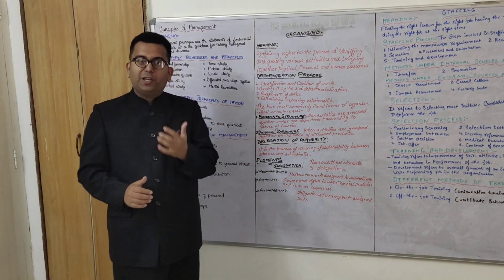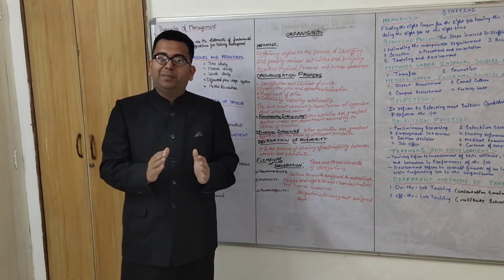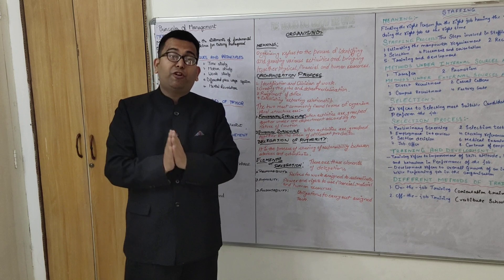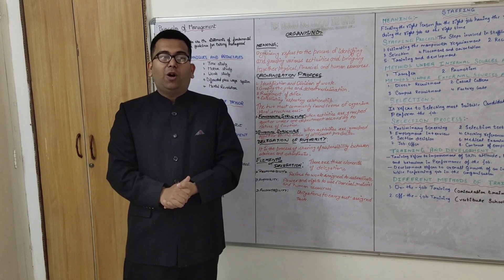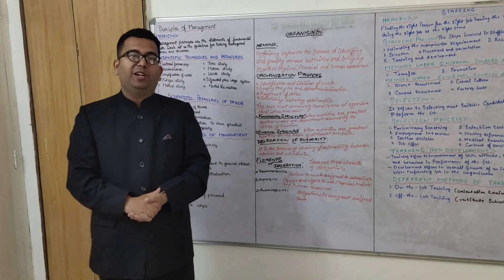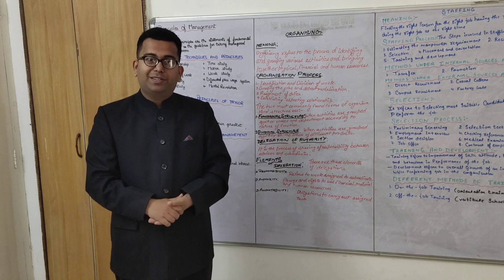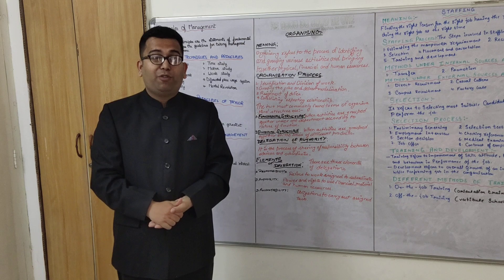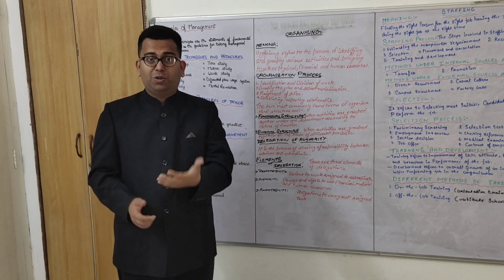Moving on to the next chapter: organizing. When I say organizing, I mean grouping items or things of the same nature and forming a department. The definition is: organizing is to provide a business with everything essential for its functioning — tools, raw materials, machinery, personnel. The organizing process starts with identifying what the work is, dividing the work, and having experts who specialize in a particular work do that work, resulting in specialization and efficiency.